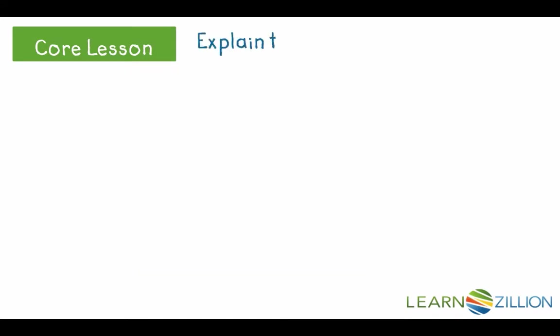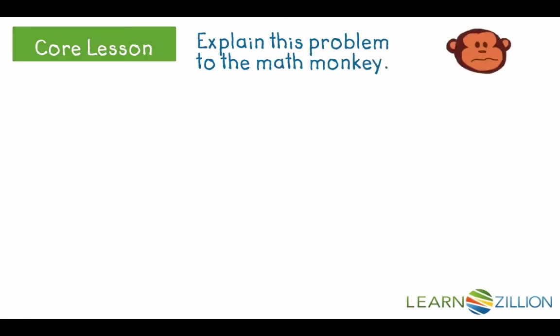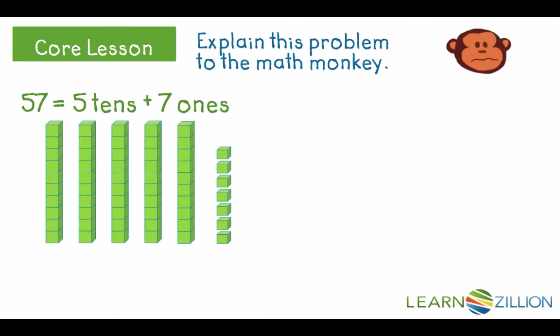Can we explain this problem to the confused math monkey using place value? We could use blocks to act out the situation. They started with 57 milks, which is 5 tens and 7 ones blocks. 25 milks were sold, 2 tens and 5 ones.